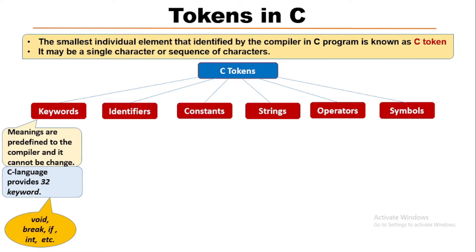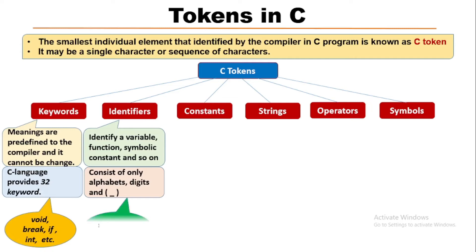Next is identifier. It is used to identify a variable, function, symbolic constant, and so on. Identifier names should consist of only alphabets, digits, and underscore sign. The name should not be a keyword. Examples of identifiers are sum, underscore fg, max, etc.